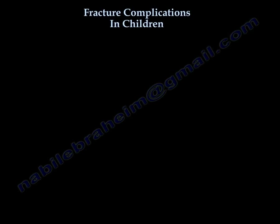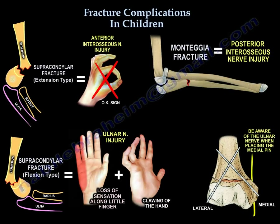There are also specific nerve injuries associated with specific fractures. Anterior interosseous nerve injury can occur from an extension-type supracondylar fracture of the humerus. Ulnar nerve injury can also occur from medial pins used to fix the supracondylar fracture of the humerus. Posterior interosseous nerve injury can occur in Monteggia fracture.